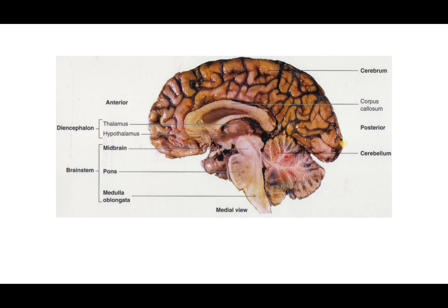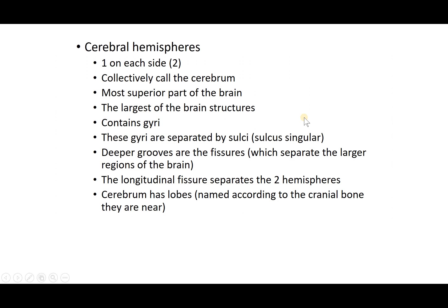In a cadaver brain, this is a cross-section — we're looking at the right lobe. The brain has been split down the middle in the sagittal plane, and we're looking at the medial-to-lateral view of the right hemisphere. You can see the diencephalon area, the brain stem, the cerebellum, and the bulk of it is the cerebrum.